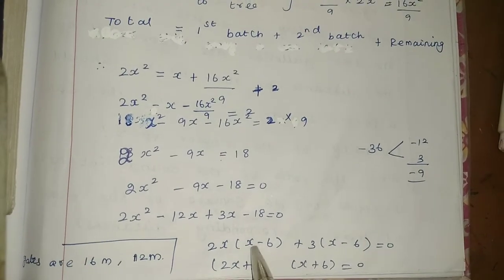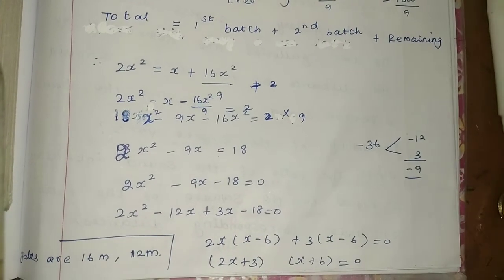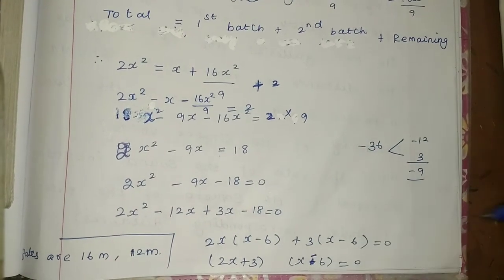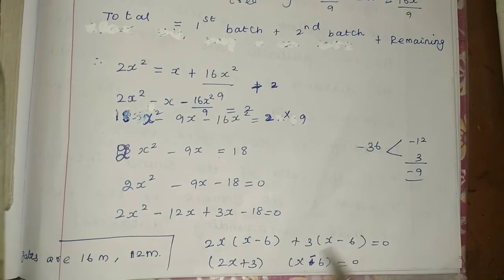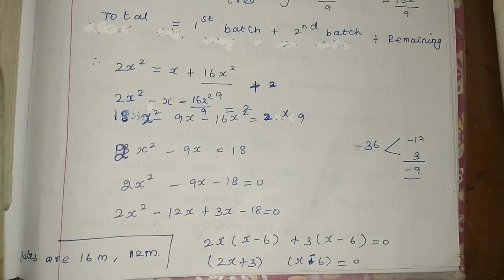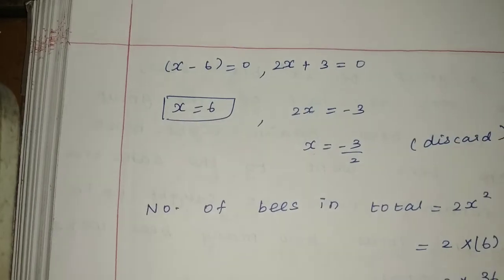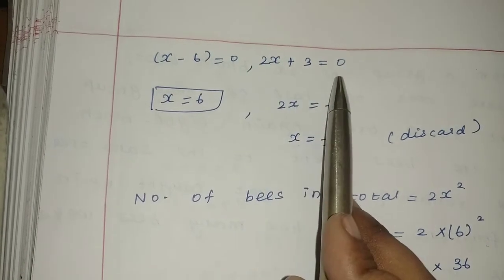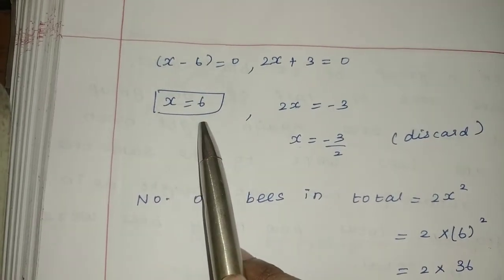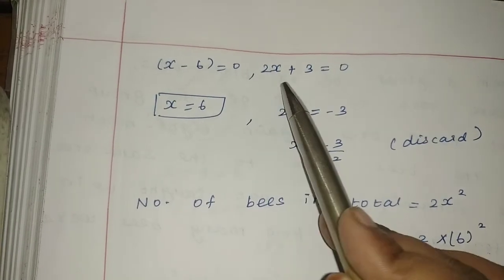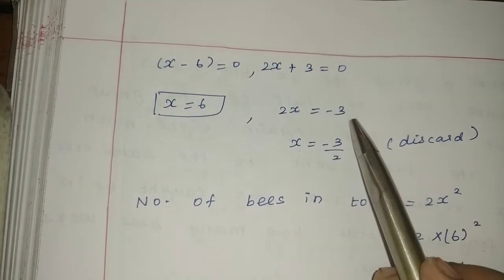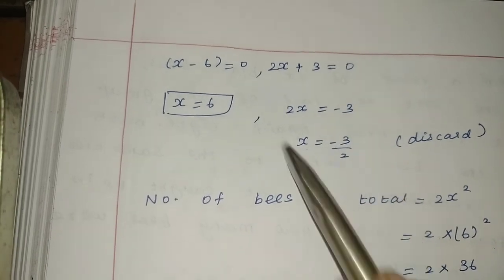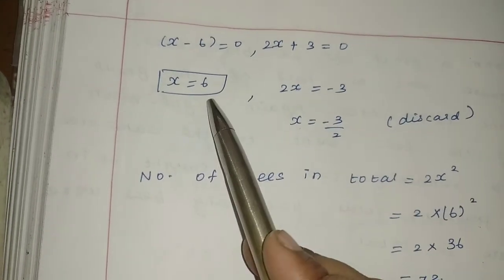Factorizing 2x² − 9x − 18 = 0: we get (x − 6)(2x + 3) = 0. So x − 6 = 0 gives x = 6, and 2x + 3 = 0 gives x = −3/2. Since a negative value is discarded, x = 6.